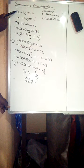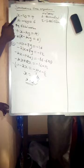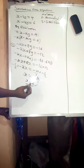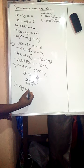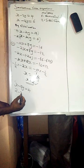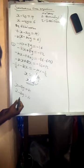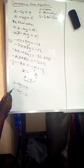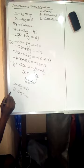Now that we have the value of x, we go back to the original equations and pick either one to find y. Let's pick the first equation: x minus 2y equals 4. Since x equals 2, substitute 2 in: 2 minus 2y equals 4. To isolate y, we use the additive inverse of 2, which is negative 2, and add it to both sides.